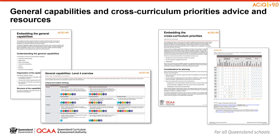The QCAA has also developed advice documents to support teachers to use the literacy and numeracy progressions. These progressions provide observable indicators of increasing complexity in literacy and numeracy, which can help teachers to develop targeted teaching and learning plans for students who are working at above and below year-level expectations. These resources can support teaching teams to interrogate connections between the general capabilities and the learning area content in more detail.